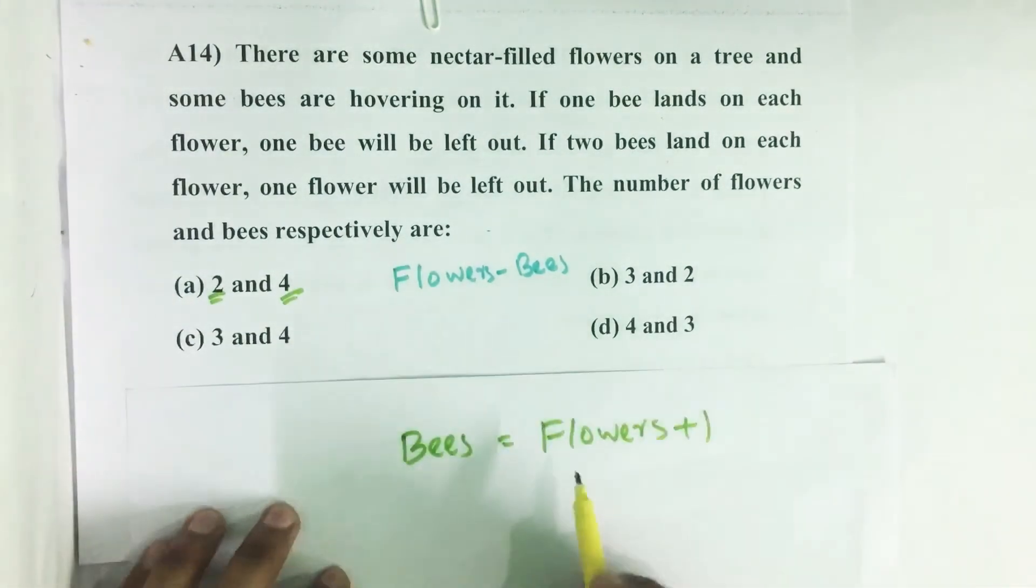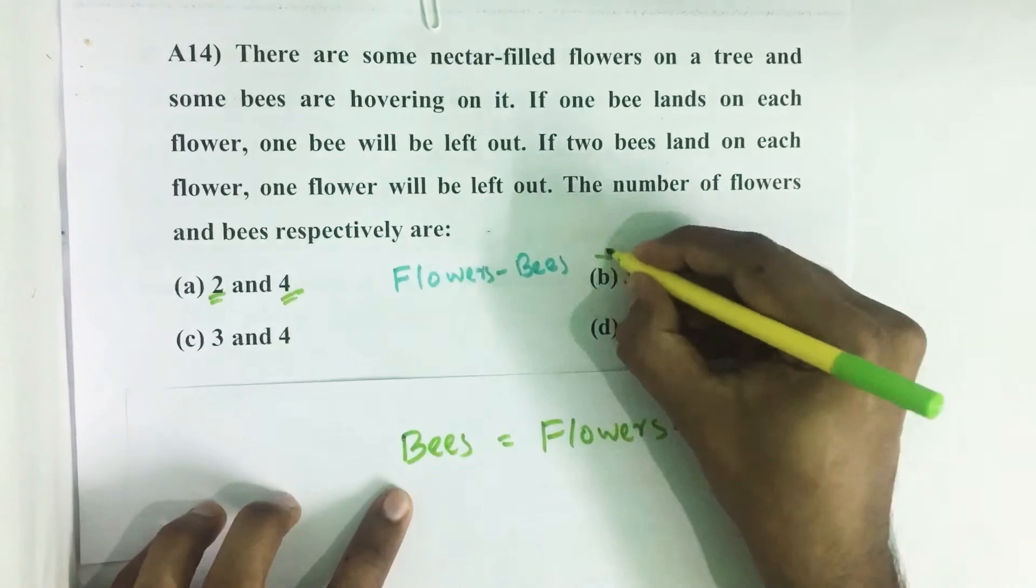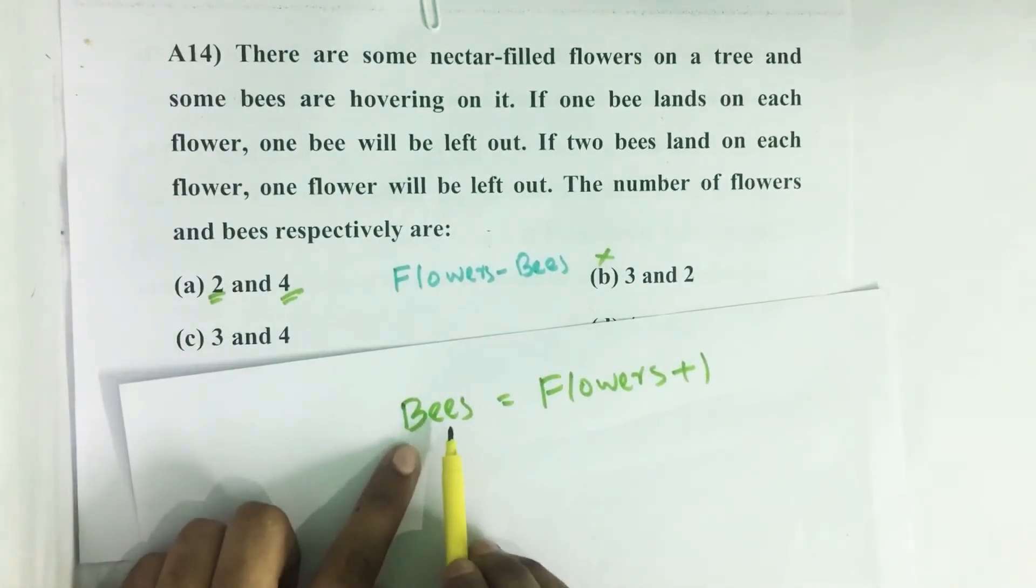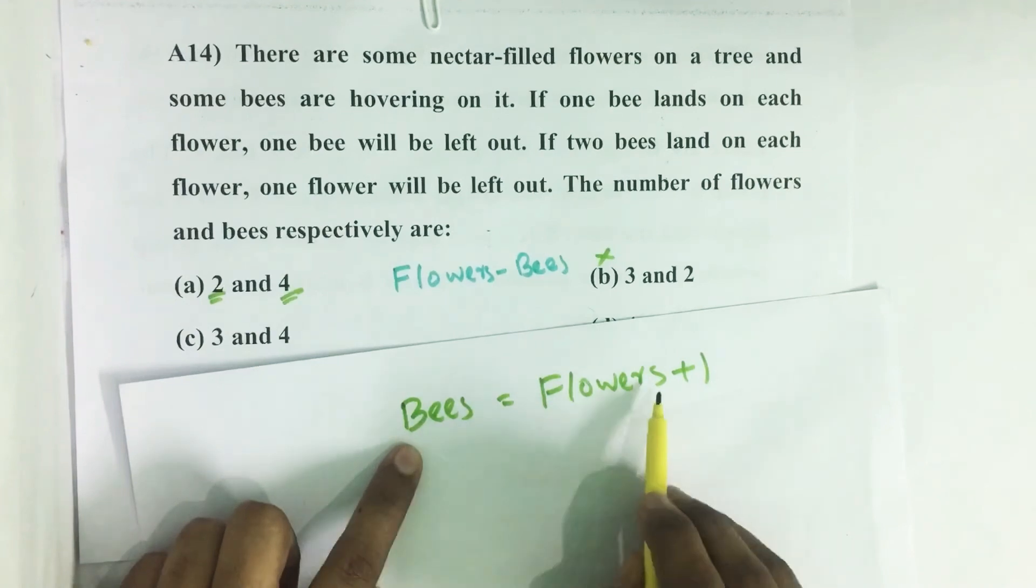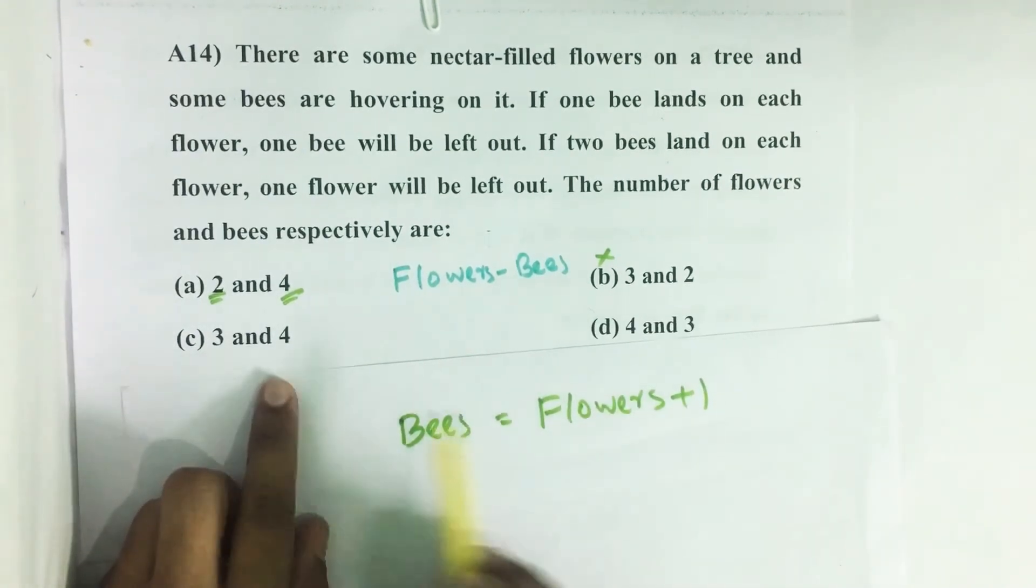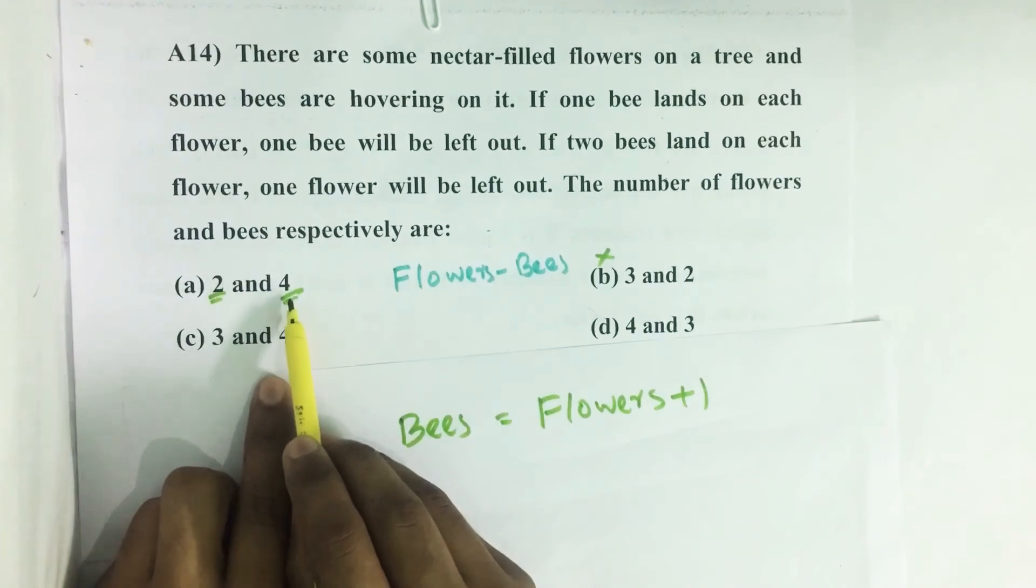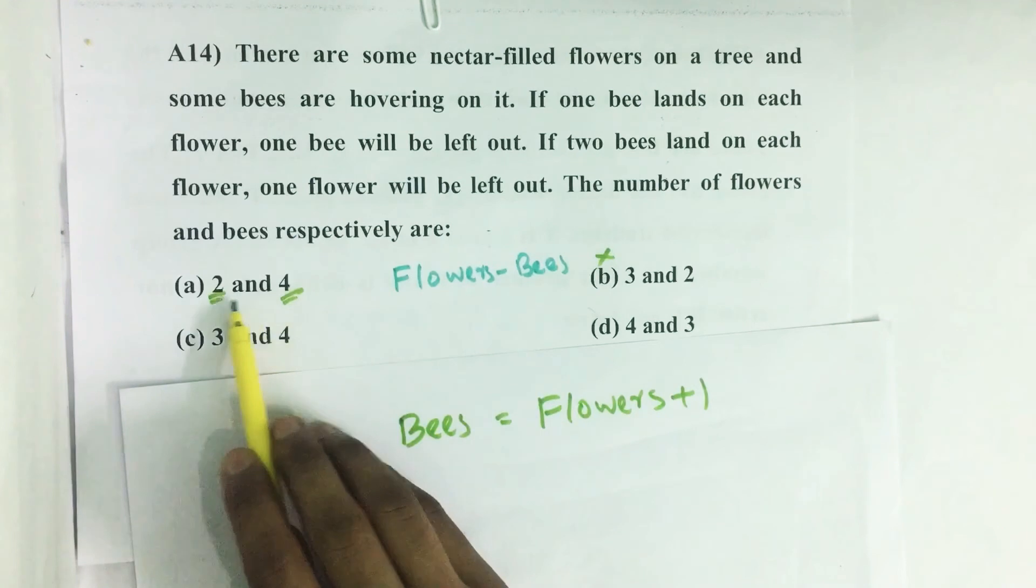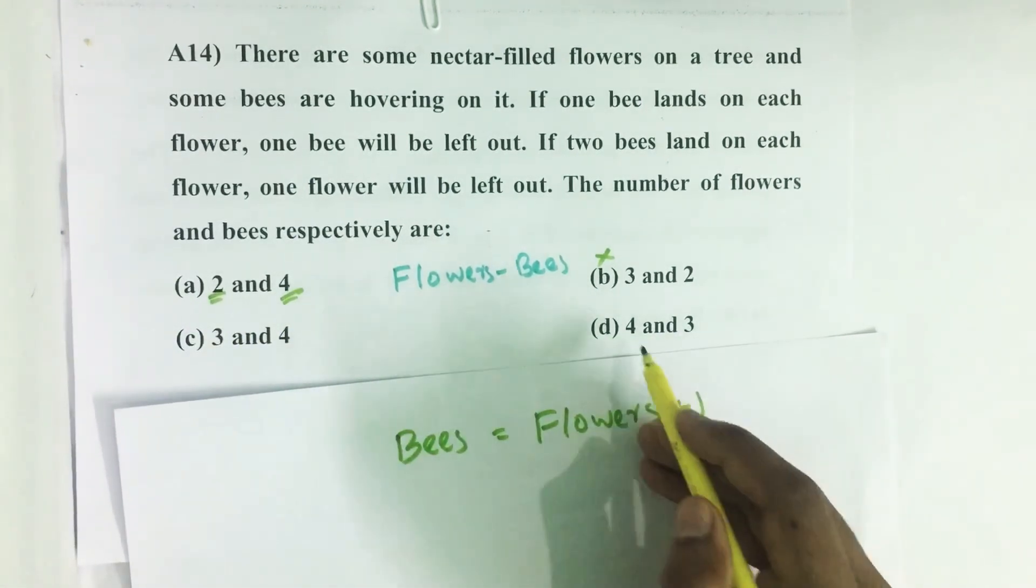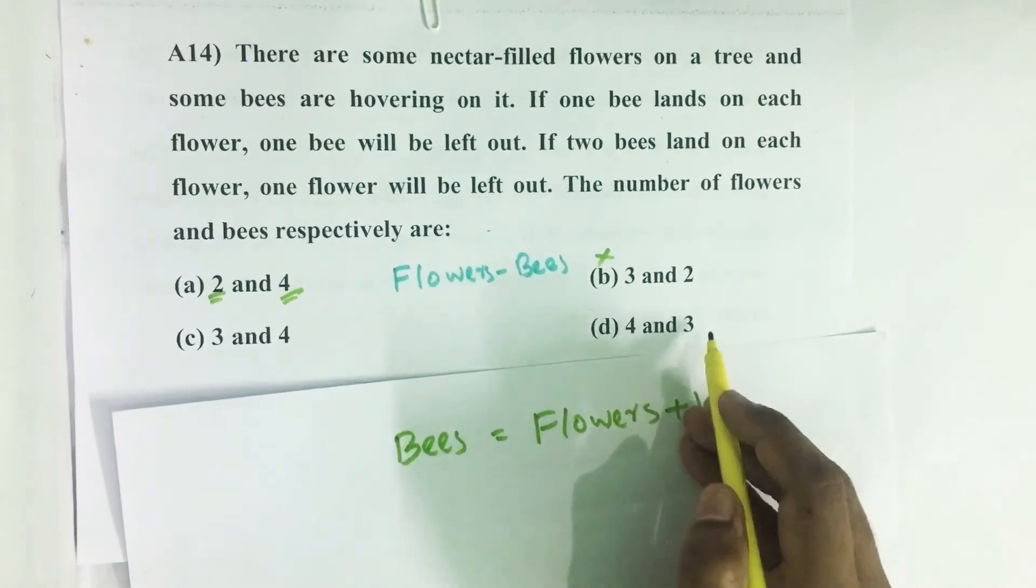So we can eliminate this option here. And bees are larger than flowers by one number, so this option is not satisfying this. Here bees are larger than flowers by two numbers. Here bees are less than flowers by one number.